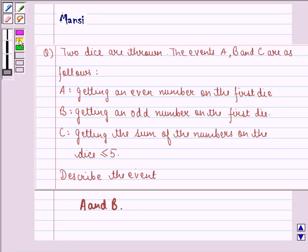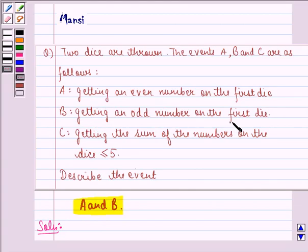Describe the event A and B. So let us start with the solution to this question. We see that event A is getting an even number on the first die and event B is getting an odd number on the first die.